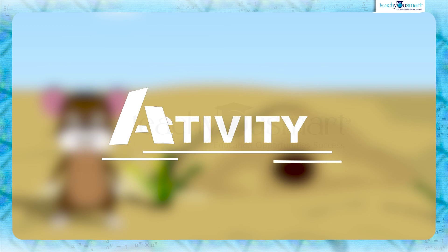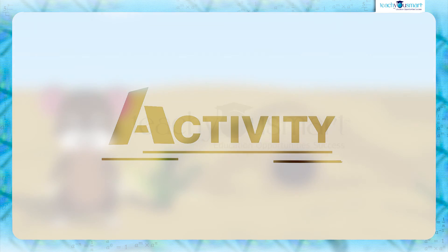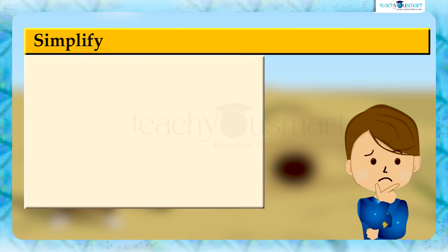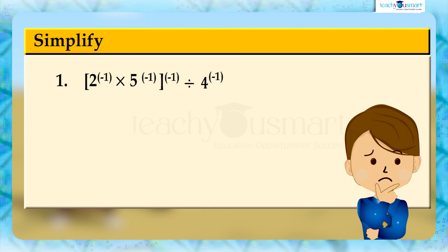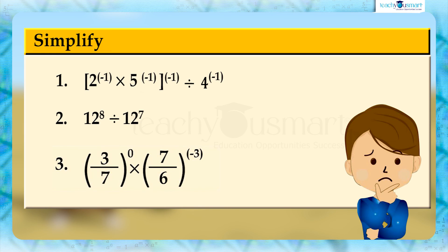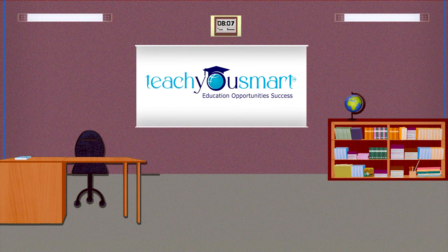Before winding up, let's check how much you understood by doing an activity. Simplify: first, (2 raised to minus 1 multiplied by 5 raised to minus 1), the whole raised to minus 1, divided by 4 raised to minus 1; second, 12 raised to 8 divided by 12 raised to 7; and third, (3 by 7) whole raised to 0 multiplied by (7 by 6) whole raised to minus 3. That's all for now, see you all in the next class.